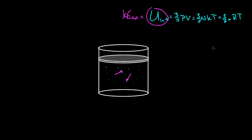My question is: how do we go about changing the internal energy? Let's say we wanted to increase the total kinetic energy — what could we do? You could say increase the pressure, or the volume, or the temperature. But I mean physically, actually in the lab, what do we do?